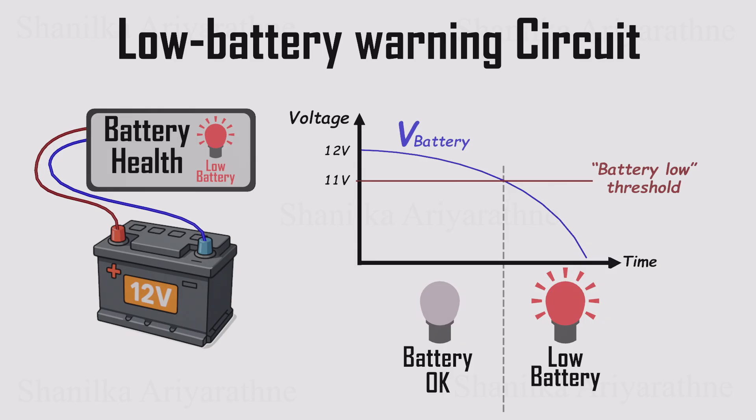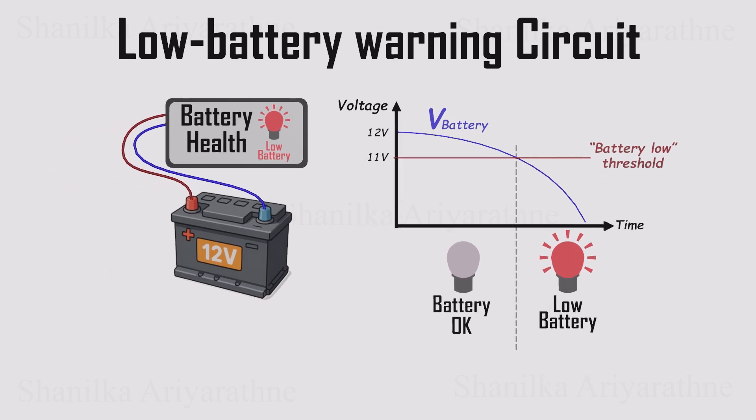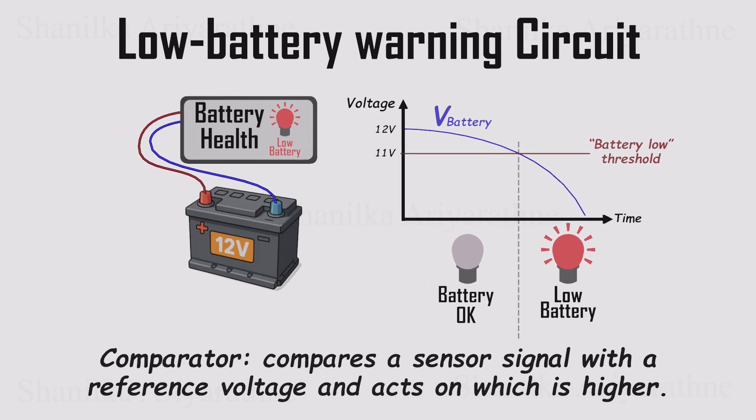The same principle runs temperature-controlled fans, light-activated switches, solar trackers, pulse generators, water level controllers, you name it. In every case, the job is the same. Take a signal from a sensor, compare it with a chosen reference voltage, and make something happen depending on which one is higher. That's all a comparator does, and it does it incredibly well.